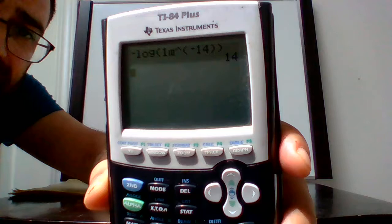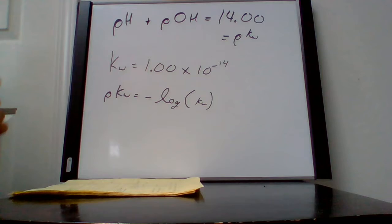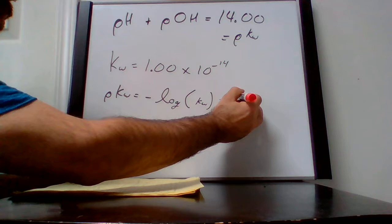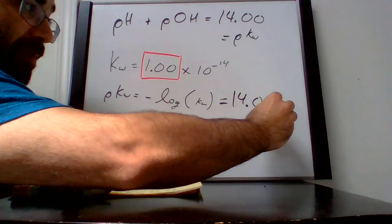I hit enter and it comes out with a value of 14. The calculator doesn't handle sig figs — you have to enter those yourself. The sig fig rule when taking the log of a number is that the result must have the same number of decimal places as sig figs in the original number. So since I'm doing 1.00 — three sig figs — this gives me a pKw of 14.000.